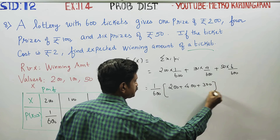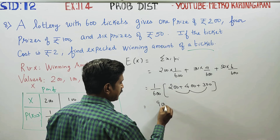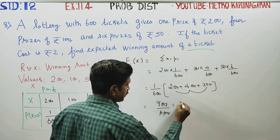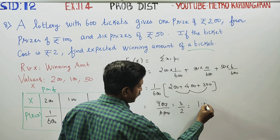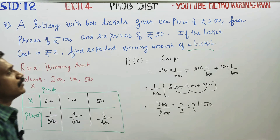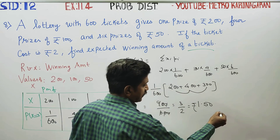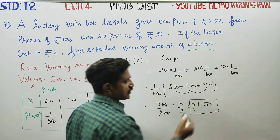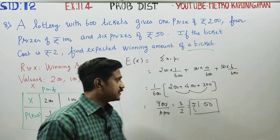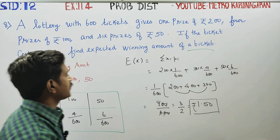Calculating: 200×(1/600) = 200, 4×100 = 400, 6×50 = 300. Adding these: 200+400+300 = 900. So 900/600 = 3/2 = Rs.1.50. The expected winning amount of a ticket is Rs.1.50.